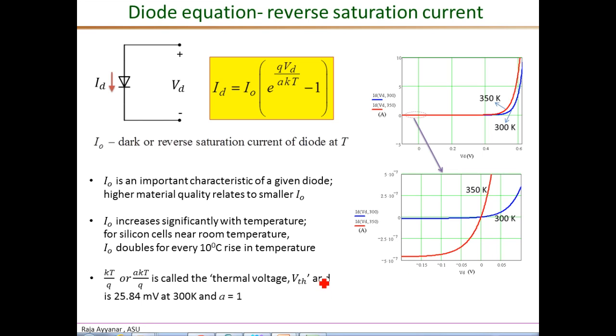Sometimes the quantity q over a KT or q over KT is referred to as the thermal voltage Vth. Therefore, the quantity inside this parenthesis would be written as the diode voltage VD divided by this thermal voltage Vth, minus one. To give some feel for the numbers, the thermal voltage is 25.84 millivolts for a standard temperature of 300 Kelvin with ideality factor a equals 1.